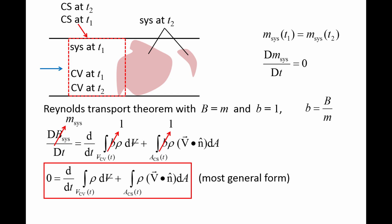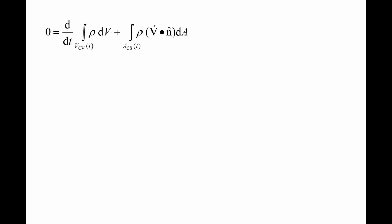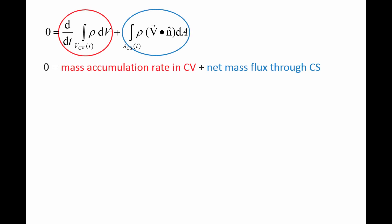It is important to remember that the velocity v is the fluid velocity relative to the control surface. Taking a closer look at this equation, the first term represents the accumulation rate of mass in the control volume, while the second term represents the net mass flux through the control surface.